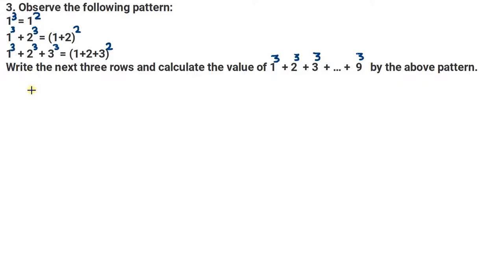Hi, welcome to my channel. I am solving question number 3. Observe the following pattern: 1 cube is equal to 1 square. 1 cube plus 2 cube is equal to 1 plus 2 whole square. 1 cube plus 2 cube plus 3 cube is equal to 1 plus 2 plus 3 whole square. Write the next 3 rows and calculate the value of 1 cube plus 2 cube plus 3 cube up to 9 cube by the above pattern.